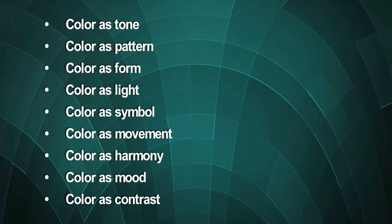Color refers to the hues with their various values and intensities. Scholars are of the opinion that color is the visual element that can have the strongest effective engagement with the senses of the beholder. The creation of a mood or atmosphere is done with the help of color. According to Art Factory, the approaches to color include: color as tone, color as pattern, color as form, color as light, color as symbol, color as movement, color as harmony, color as mood, and color as contrast.